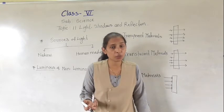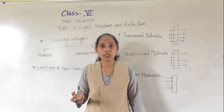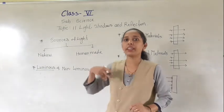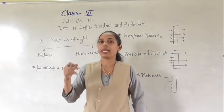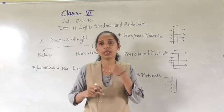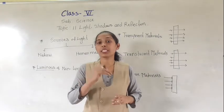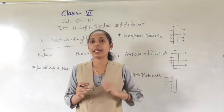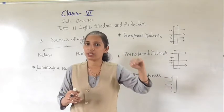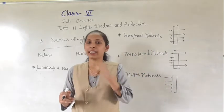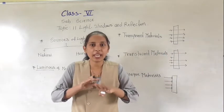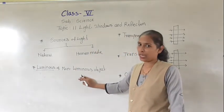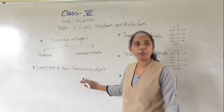If non-luminous objects don't give light, how can we see them? Non-luminous objects don't have their own light, but they reflect the light which falls on them. That reflected light reaches our eyes, and then we can observe the object. For example, the moon — the moon doesn't have its own light. It reflects the light of the sun, and that is why we can see the moon. The moon is a non-luminous object.